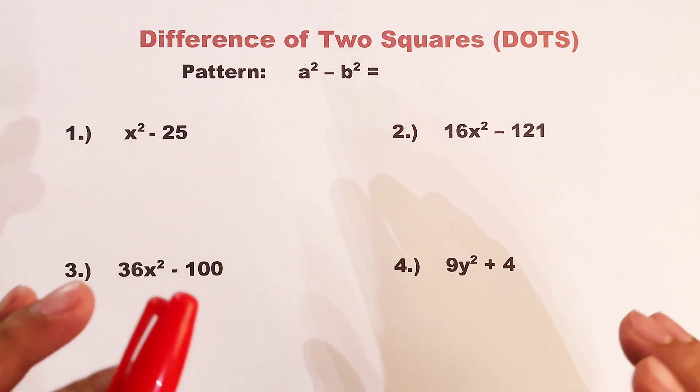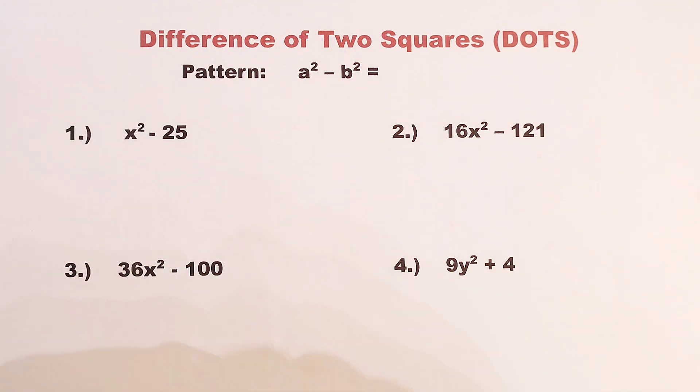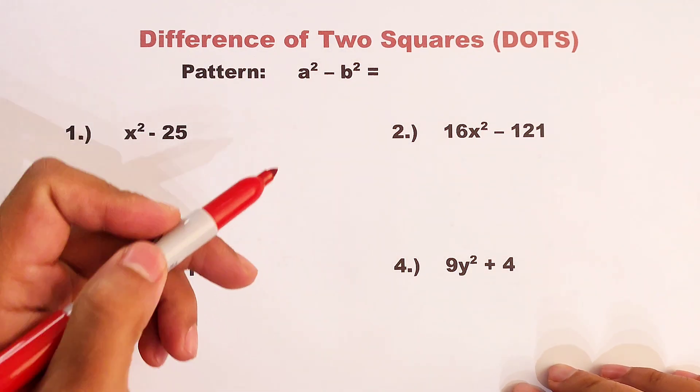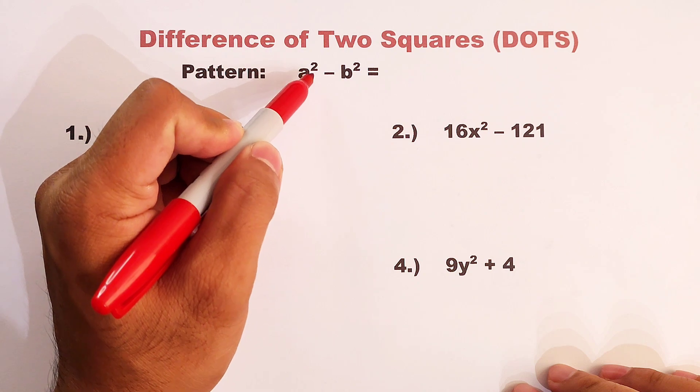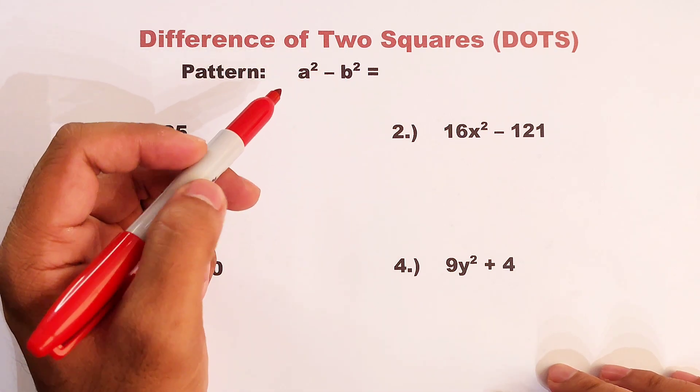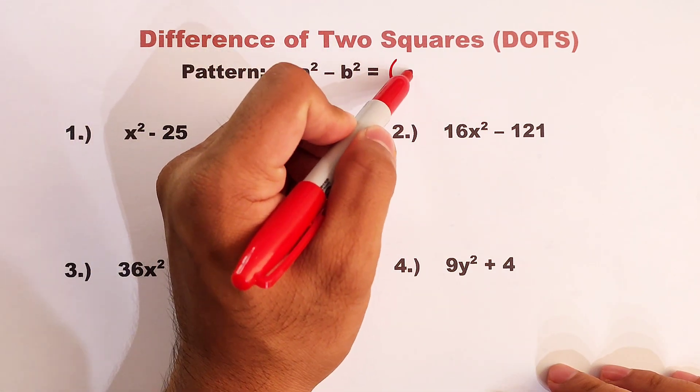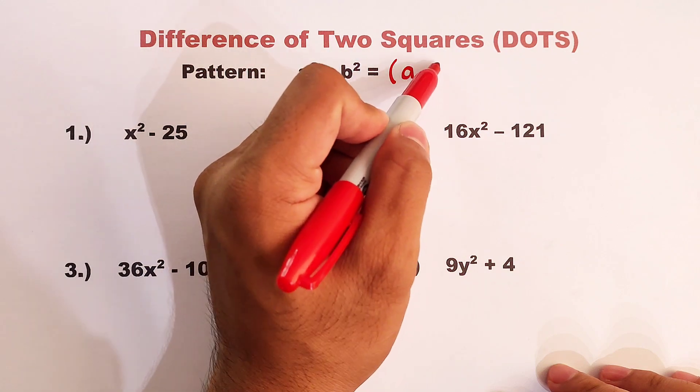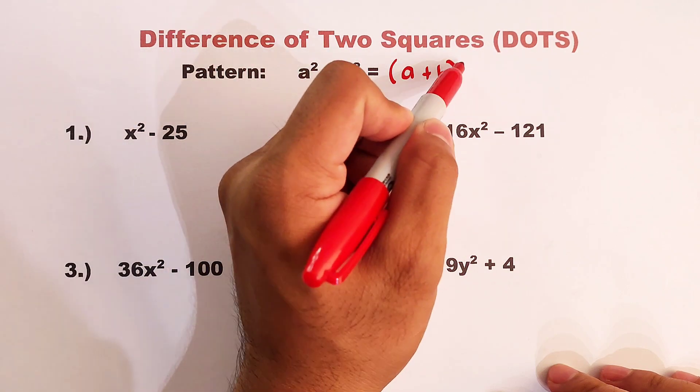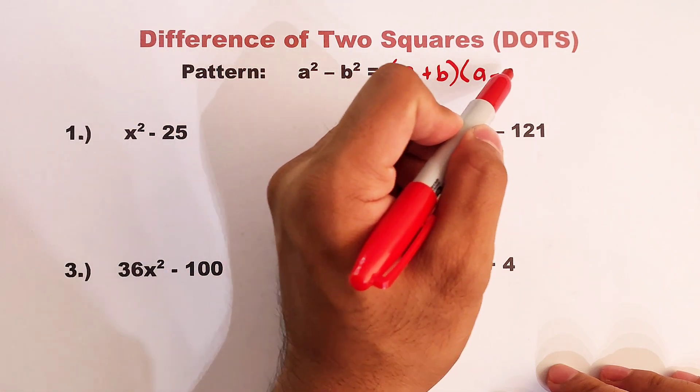So without further ado, let's do this topic. The basic pattern for this topic is that we have a squared minus b squared, and the pattern to factor this out is simply a plus b times a minus b.